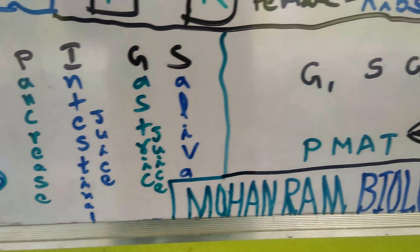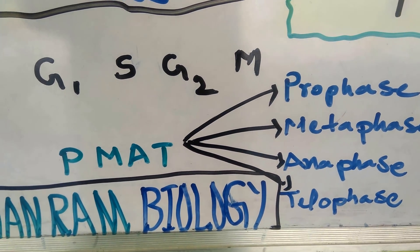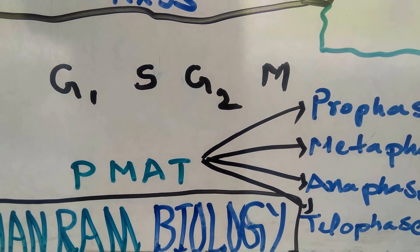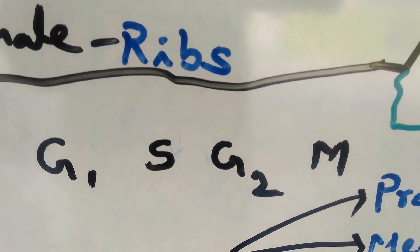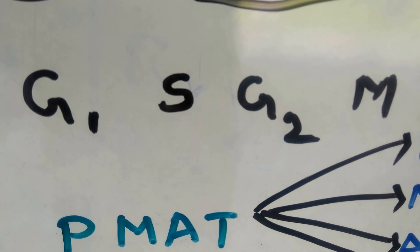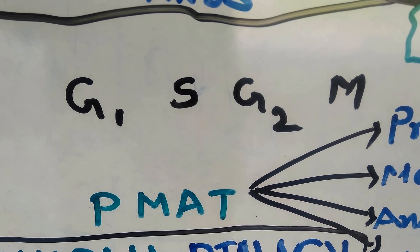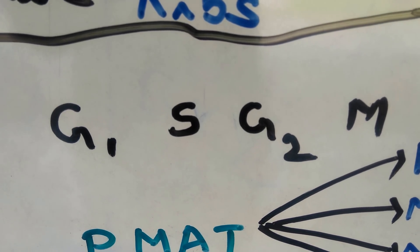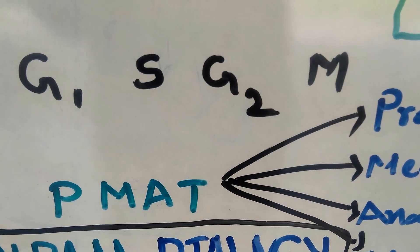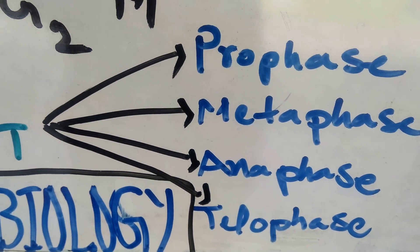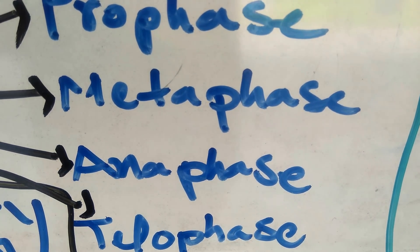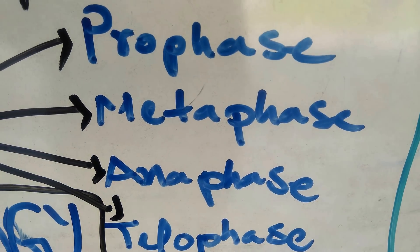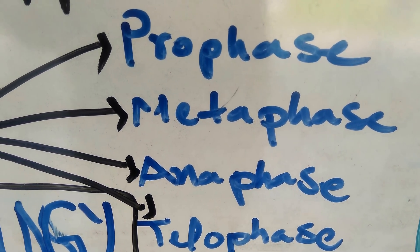The last important topic is the stages of the cell cycle. The order is G1, S, G2, M — G1 is growth phase 1, S is synthetic phase, G2 is growth phase 2, and M is mitotic phase. Within the mitotic phase, the code PMAT gives the four sub-phases: Prophase, Metaphase, Anaphase, and Telophase.